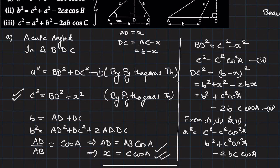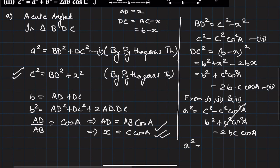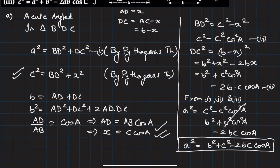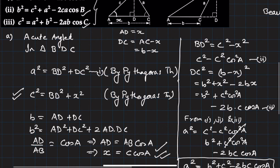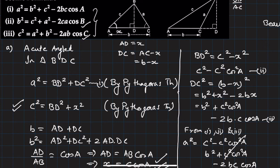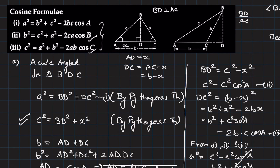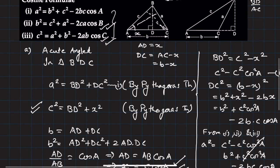Combining equations 1, 2, and 3: a² = BD² + DC² = (c² - c²cos²A) + (b² + c²cos²A - 2bc·cosA). The c²cos²A terms cancel, giving a² = b² + c² - 2bc·cosA. This is the cosine formula. By similar logic — dropping perpendiculars from A and then C — you can prove the other two relations as well.